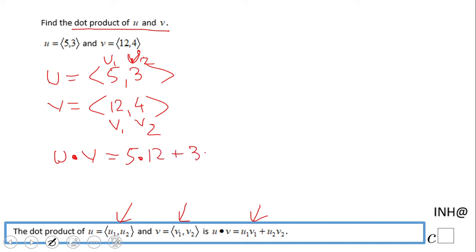From here it's just simplification: 5 times 12 is 60, 3 times 4 is 12. So 60 plus 12 equals 72. The dot product u•v is 72.